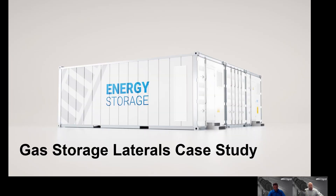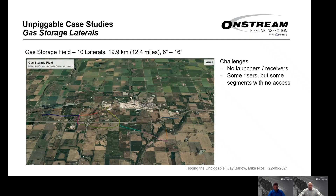The next case study is another typical application: a gas storage lateral. This is a gas storage field where we've inspected 10 of the laterals for a total of 19.9 kilometers, or 12.4 miles. Pipe segments range in diameter from 6-inch to 16-inch. The challenge: there are no launchers and receivers on any of the segments. Some segments have risers providing above-ground access points, but others have no above-ground access whatsoever.